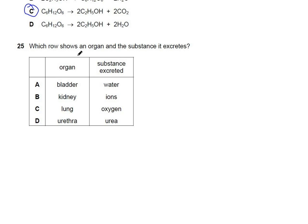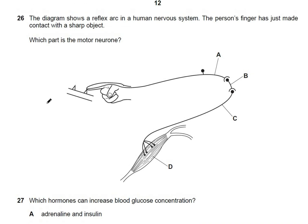Question 25: which row shows an organ and the substance it excretes? The bladder excreting water is wrong. The kidney excreting ions is correct. The lung excretes carbon dioxide, not oxygen. The urethra does not excrete urea. The correct option is B.